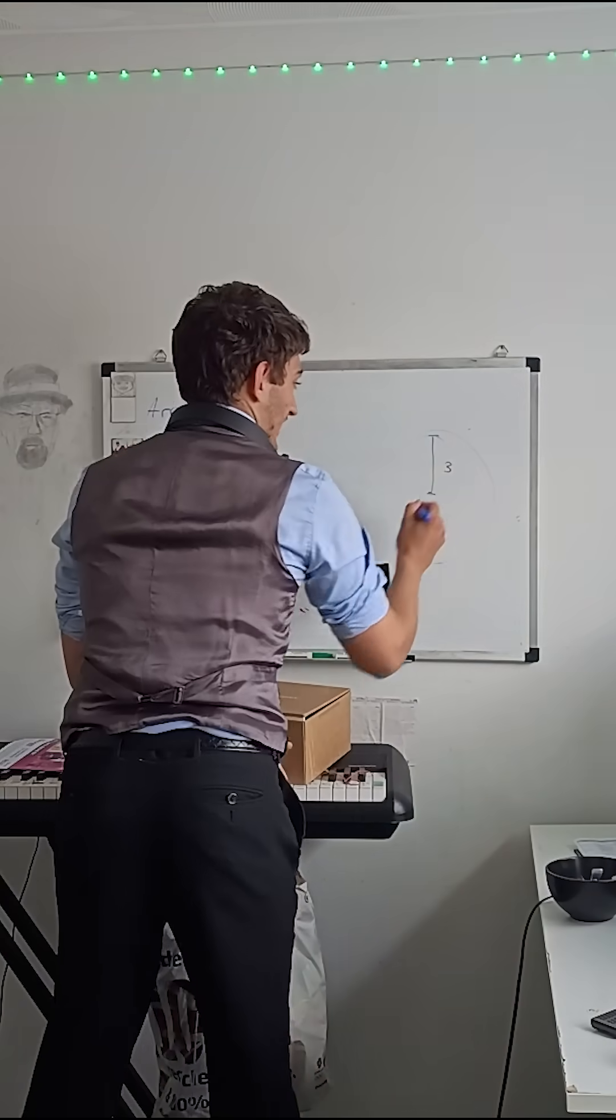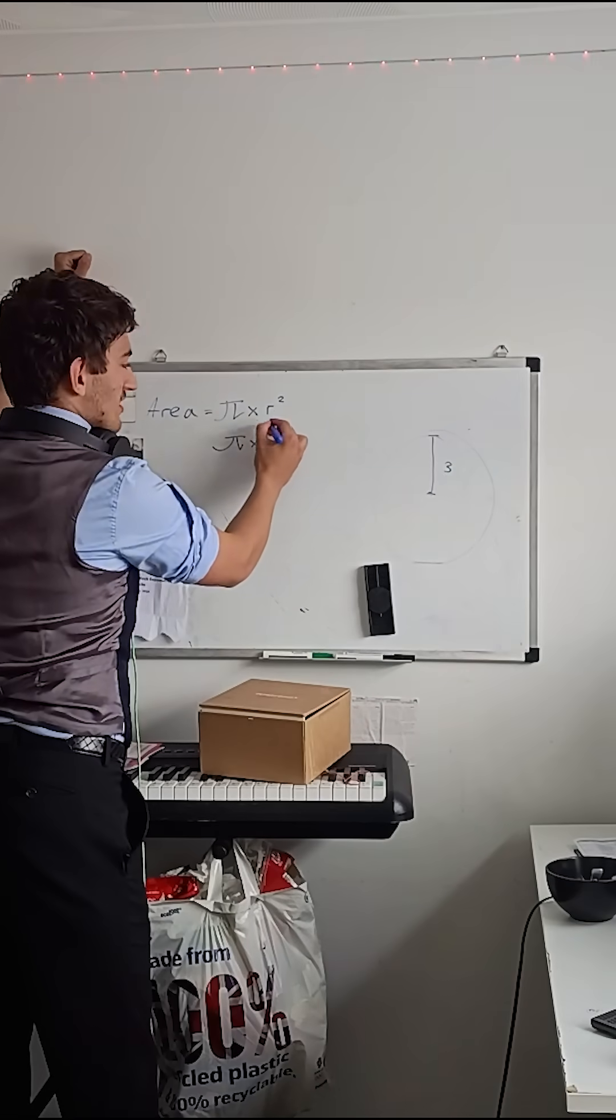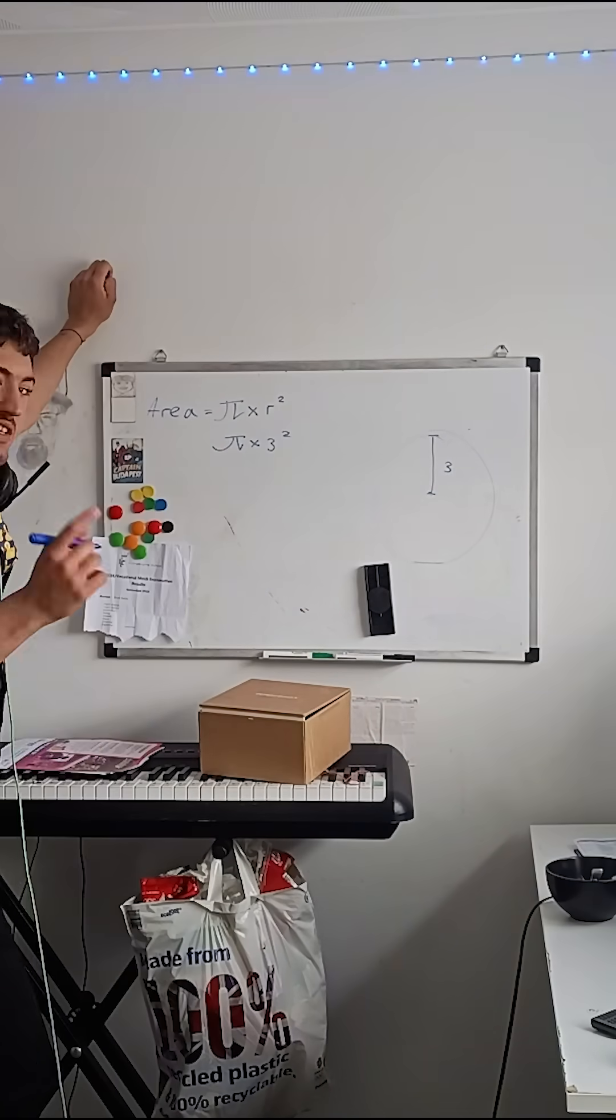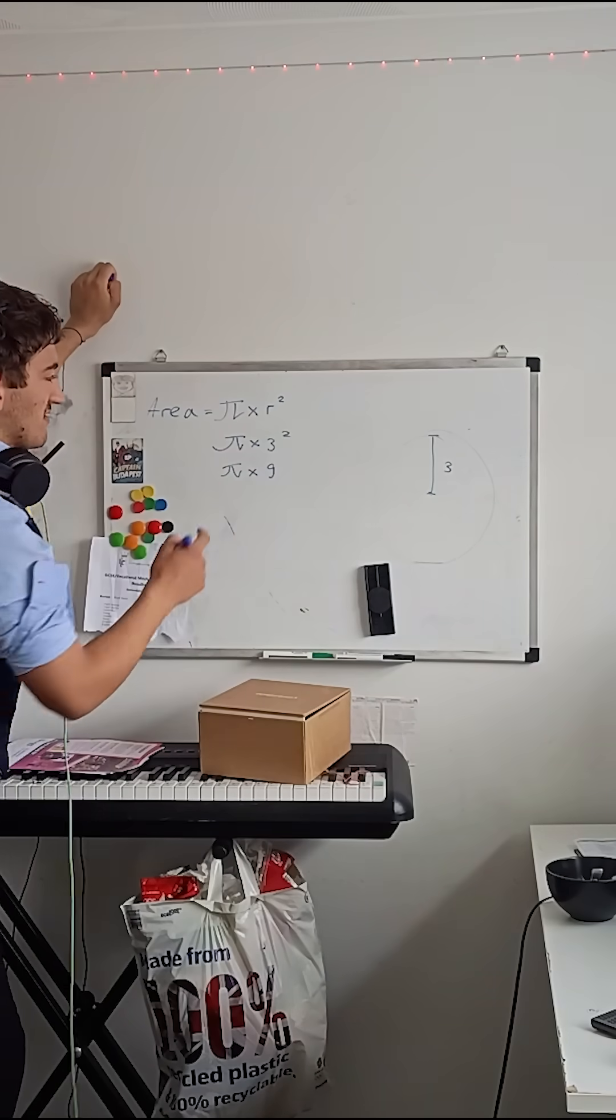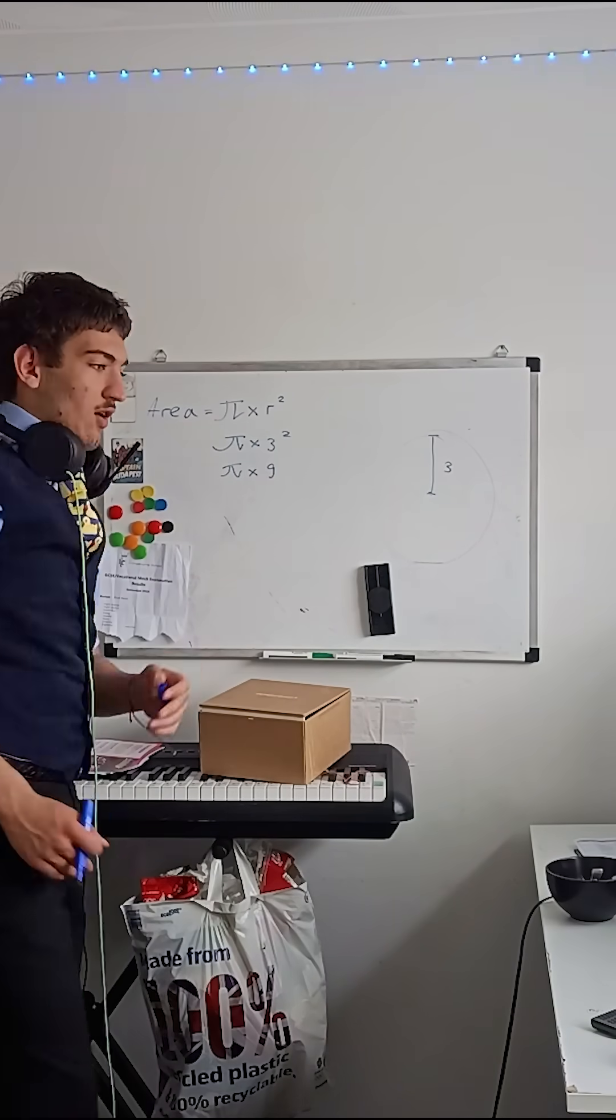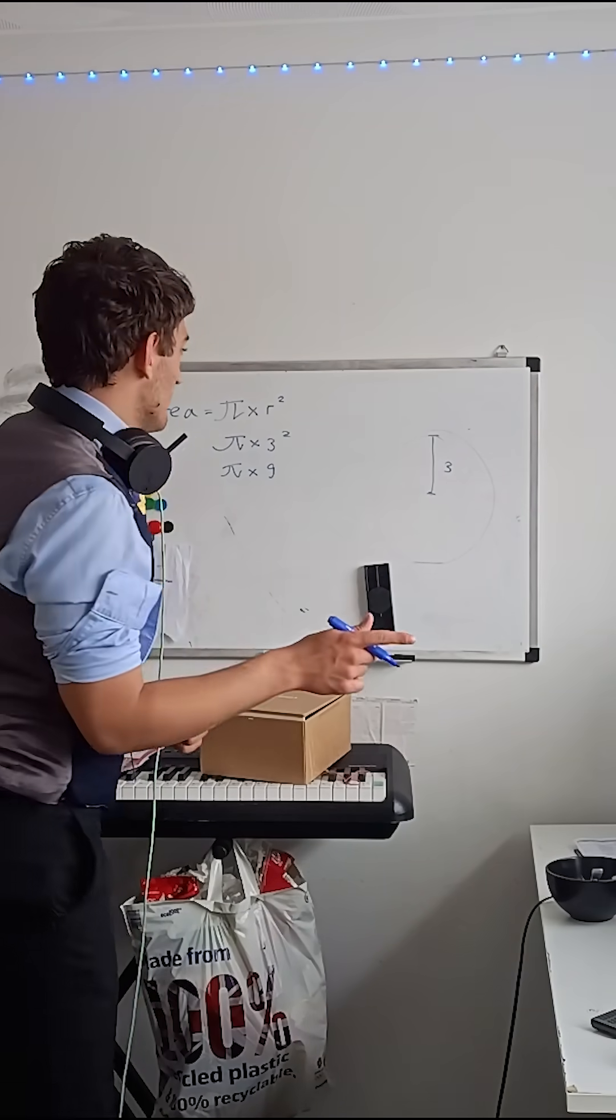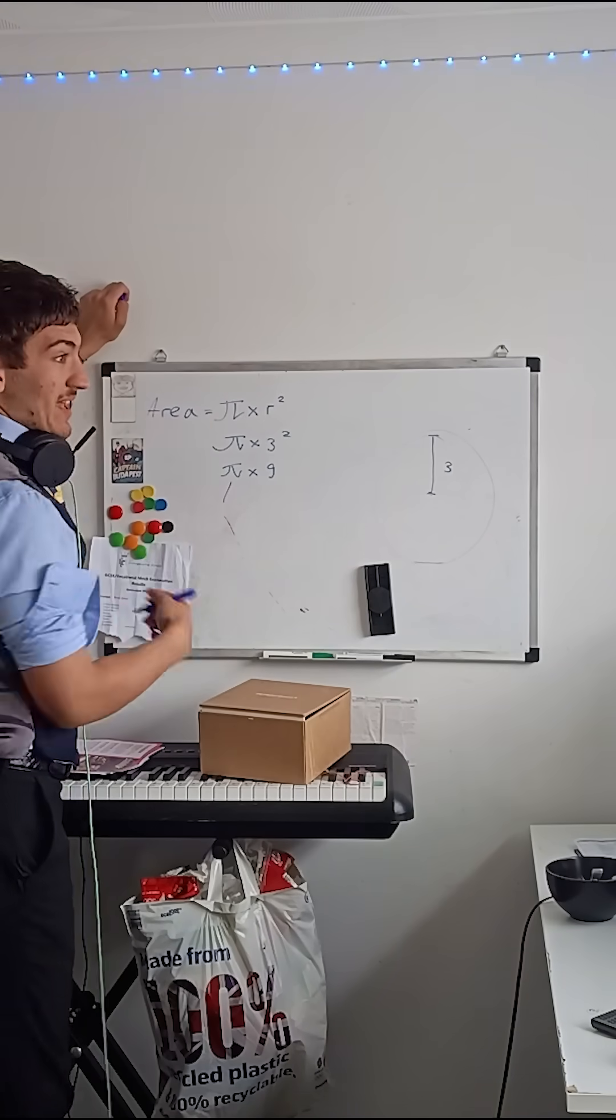let's say the radius is three. That would make pi times the radius, which is three, to the power of two. This means that this is also equal to pi times nine, because three to the power of two is nine. Now, what you can do is either you times pi times nine, which makes nine pi,